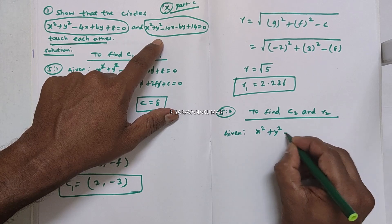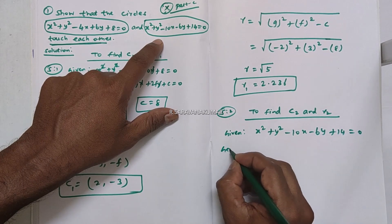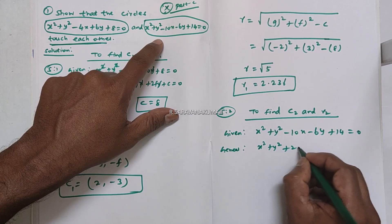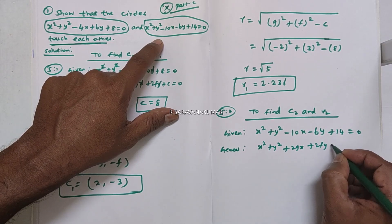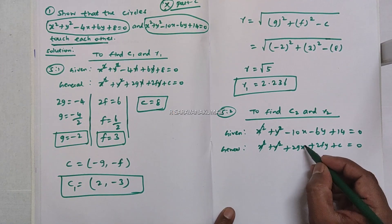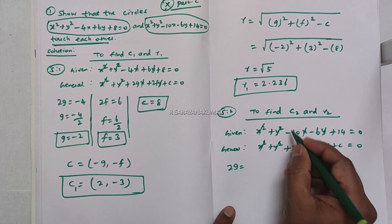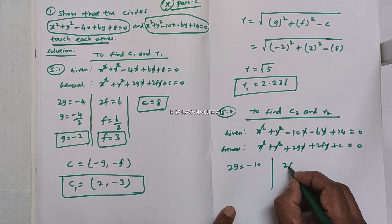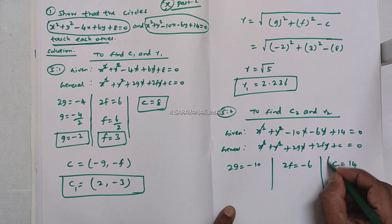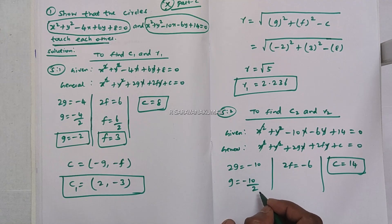The second circle equation is x² + y² - 10x - 6y + 14 = 0. Comparing with the general equation x² + y² + 2gx + 2fy + c = 0, we get: 2g = -10, so g = -5; 2f = -6, so f = -3; and c = 14.